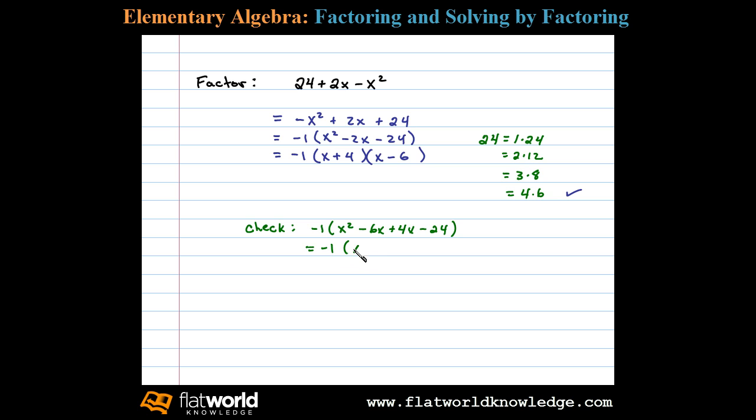Combining the x terms gives negative 2x, and then minus 24. If we distribute the negative 1 we'll have negative x squared plus 2x plus 24. And that's what we started with, so our factorization checks out.